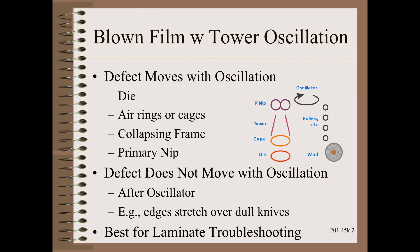Most web manufacturing is streaky, and blown film is no exception. By streaky I mean that the cross web profile is relatively constant with time. Some features may be present for minutes, hours, days, or even the life of the machine.